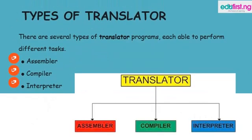What are the types of translator? We have several types of translator programs, each able to perform different tasks. We have: one, the assembler; two, the compiler; and three, the interpreter.